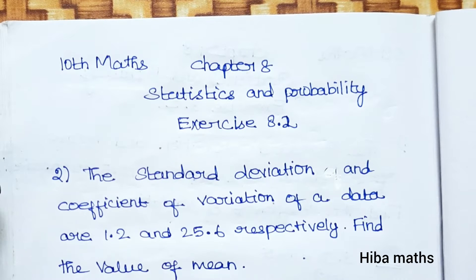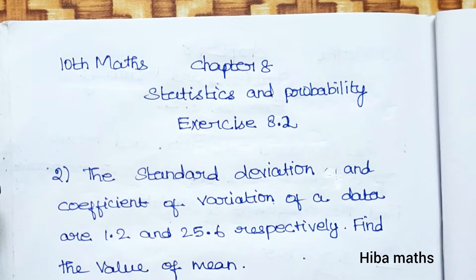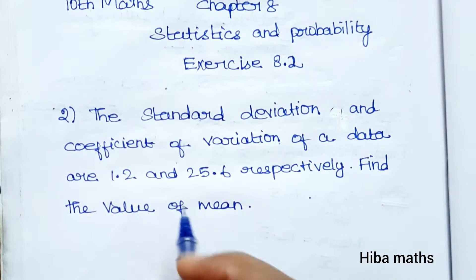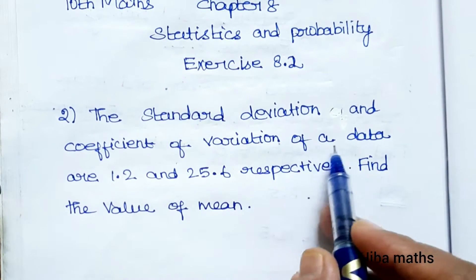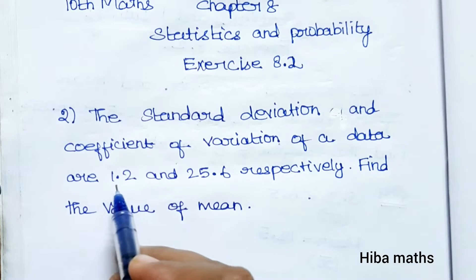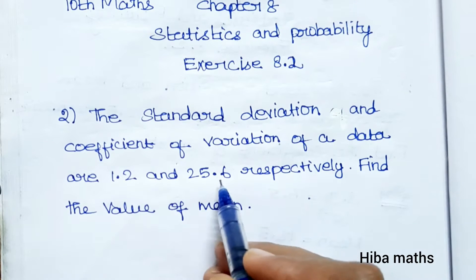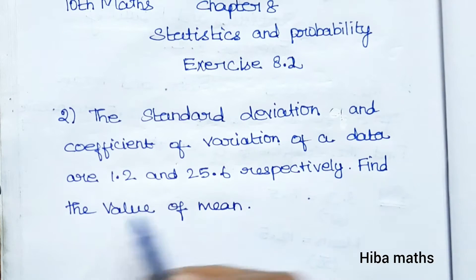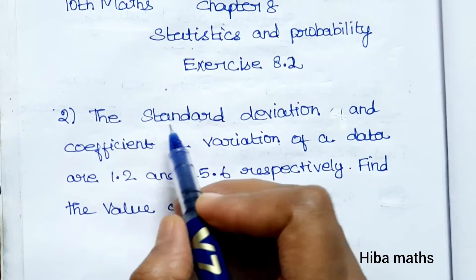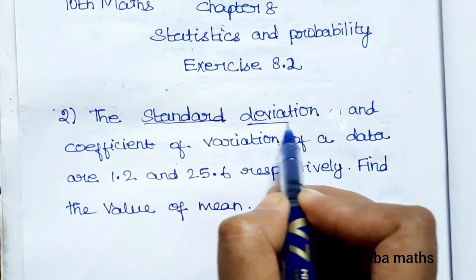Hello students, welcome to Hibamax 10 standard, Chapter 8: Statistics and Probability, Exercise 8.2, second question. The standard deviation and coefficient of variation of a data are 1.2 and 25.6 respectively. Find the value of mean.